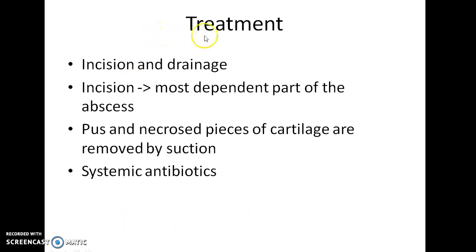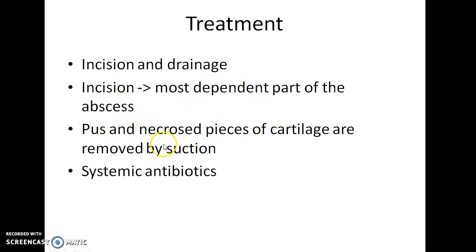How do you treat a case of nasal septal abscess? Incision and drainage is the treatment of choice. Incision is made in the most dependent part of the abscess. The pus and necrotic pieces of cartilage are removed by suction. Systemic antibiotics are also given to the patient.